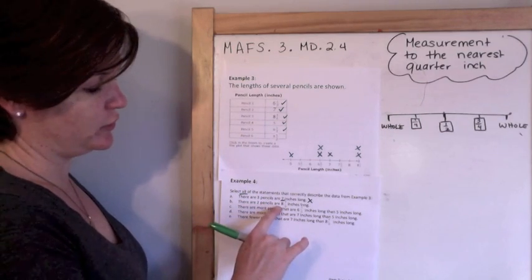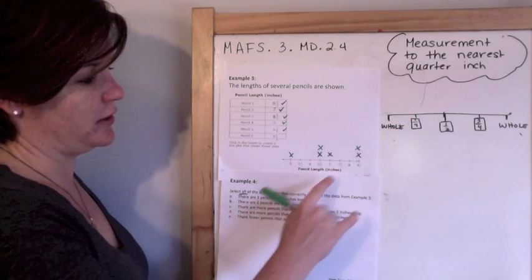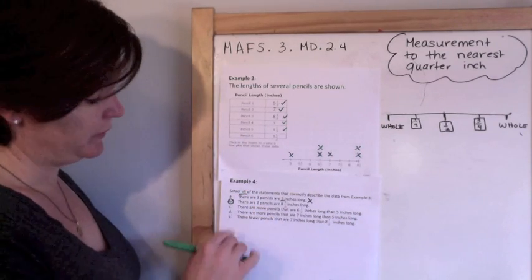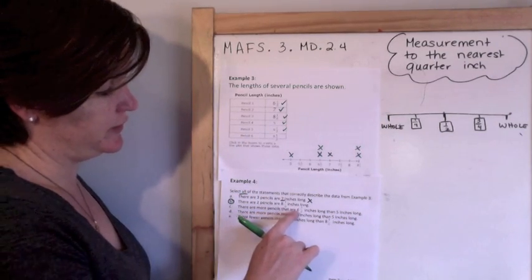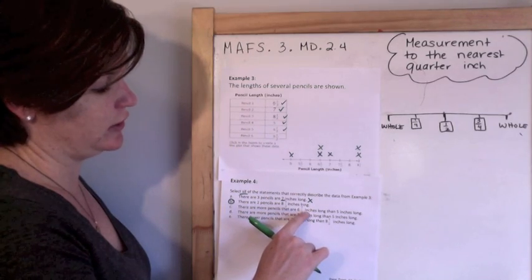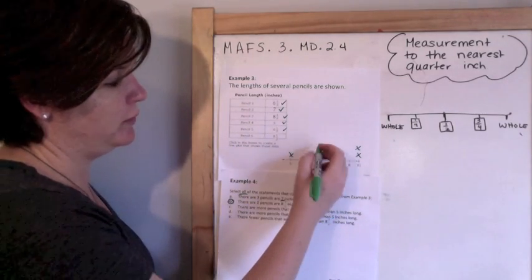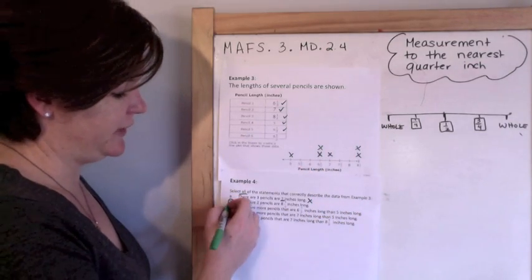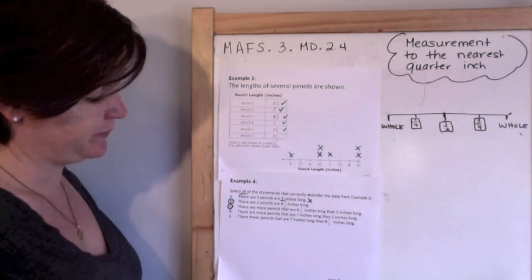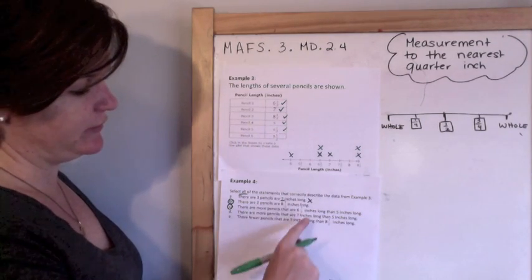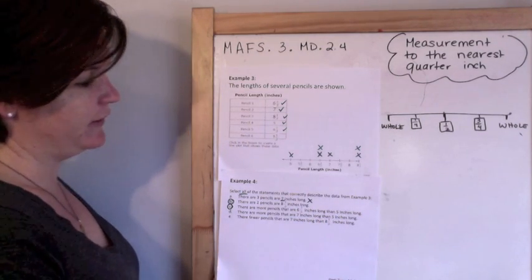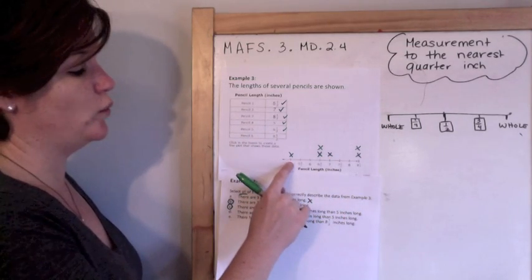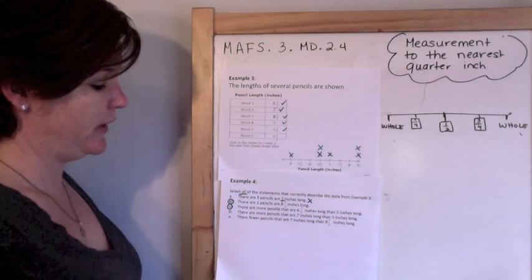So I'm going to go through it nice and slow and make sure I understand it. There are three pencils that are seven inches long. There's only one pencil that is seven inches long, so I'm going to eliminate that answer choice. There are two pencils that are eight and a half inches long. One, two. Yes.